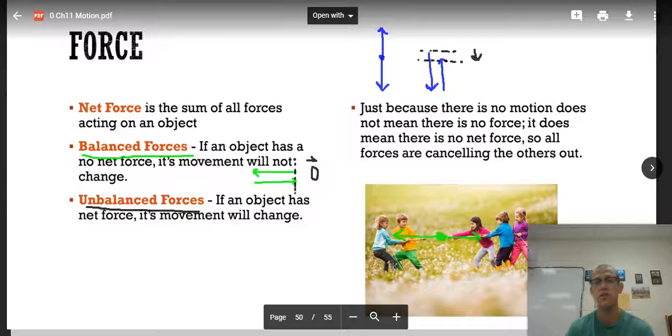However, that doesn't mean there's no motion. Just because there's no motion doesn't mean there's no force. It just means that there's no net force. So all the forces are canceling each other out. This example that I depicted with the tug of war, that's an example where the forces are canceling out. But you know there's a pull on this rope in this direction and a pull on the rope in this direction. So there are forces present.